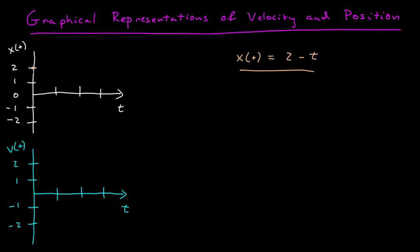At 0, it's equal to 2, and then at 1 second, it's equal to 1. At 2, it's equal to 0, and then at t is equal to 3, it looks like it's negative 1. I've got a straight line here. So there's my position function of time.